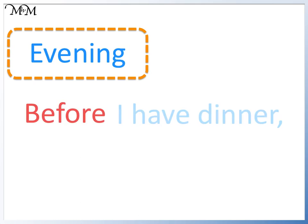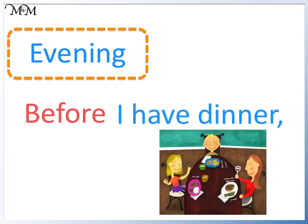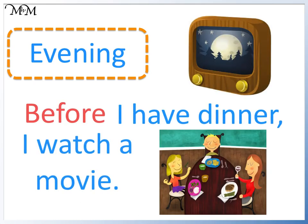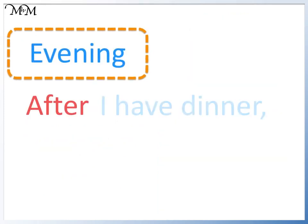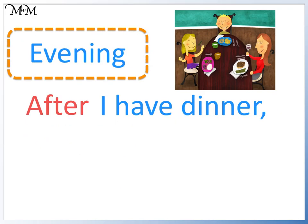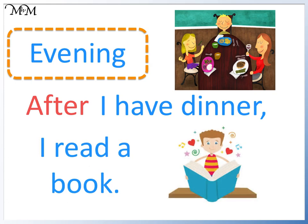Evening is at the end of the day when it starts to get dark. Before I have dinner, I watch a movie. Before means that we watch the movie and then have dinner. After I have dinner, I read a book. After means that we have dinner and then read a book.